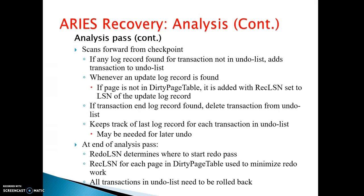The analysis pass in more detail: it scans forward from the checkpoint. If a log record is found for a transaction not in the undo list, that transaction is added to the undo list. Whenever an update log record is found and the page is not in the dirty page table, it is added with the record LSN set to the LSN of the update log record. If a transaction end log record is found, the transaction is deleted from the undo list. The last log record for each transaction in the undo list is tracked, as it may be needed for later undo.